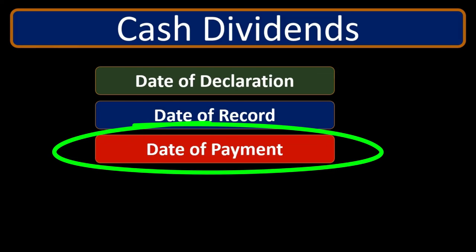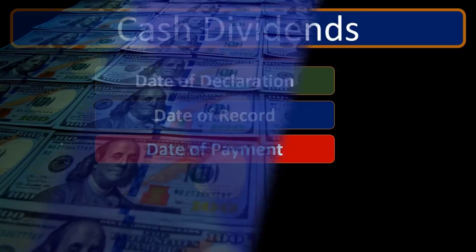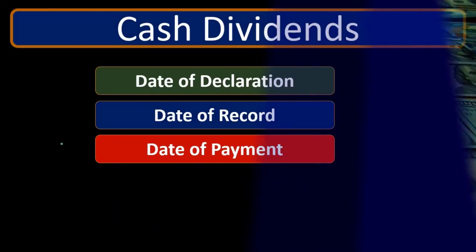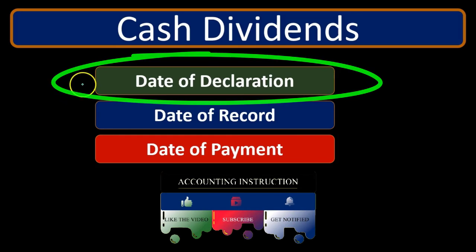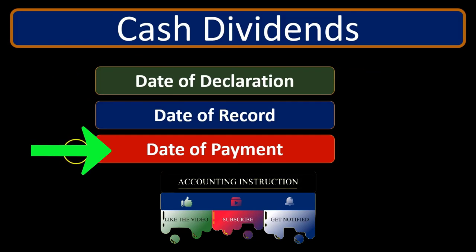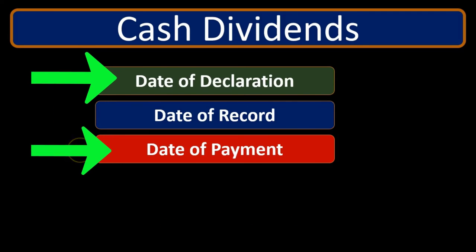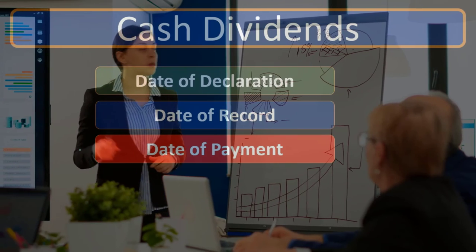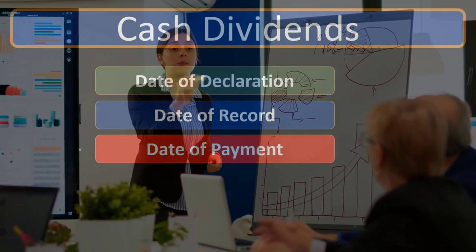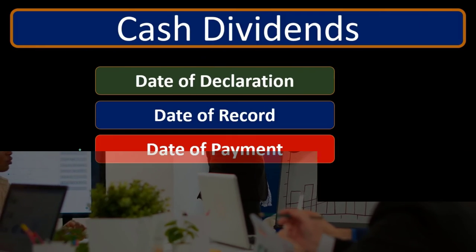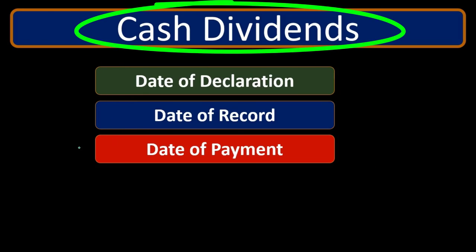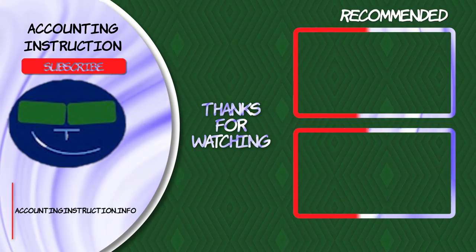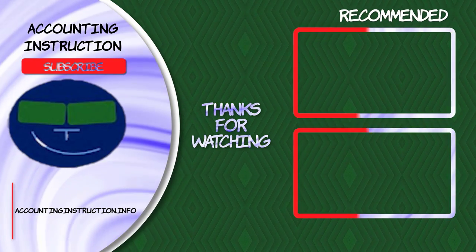The third date is the date of payment, which also has a journal entry. Cash goes out of the company to the owners, and we pay off the dividends payable liability created on the declaration date. Importantly, the income statement is not affected at any of these dates. Just like a draw, we're simply taking accumulated earnings and giving them back to the owners — it's not an expense and has nothing to do with revenue minus expenses.